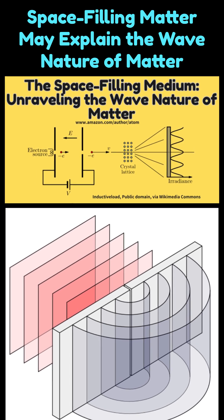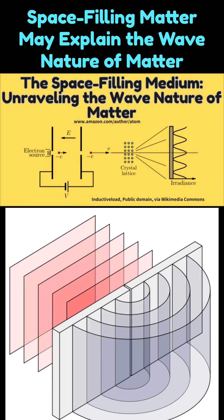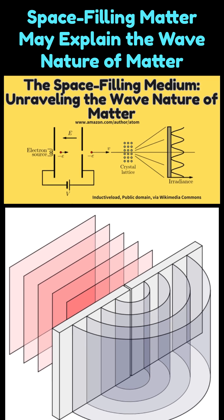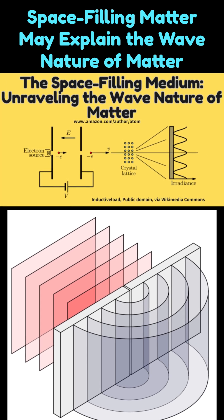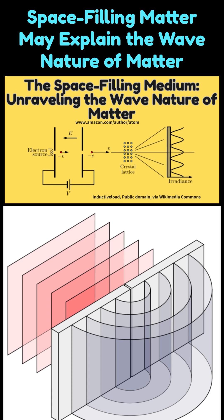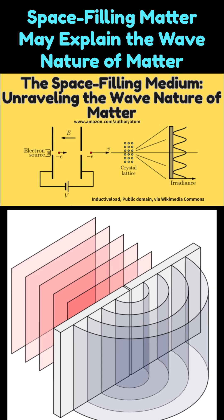determine through which slit each electron passes. The detector interacts with the electrons, altering their paths. This interaction disrupts the conditions required for interference, thereby eliminating the interference pattern. This interpretation offers a novel perspective on the famous observer effect